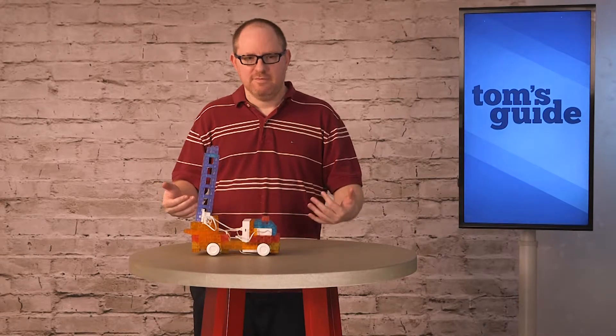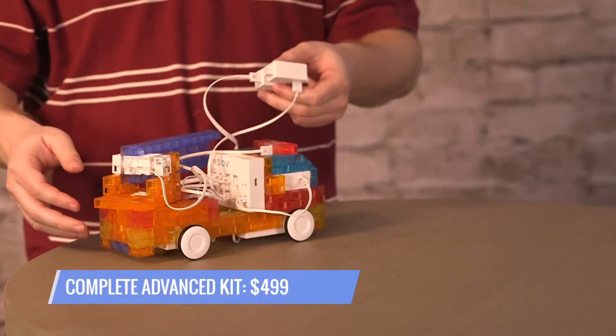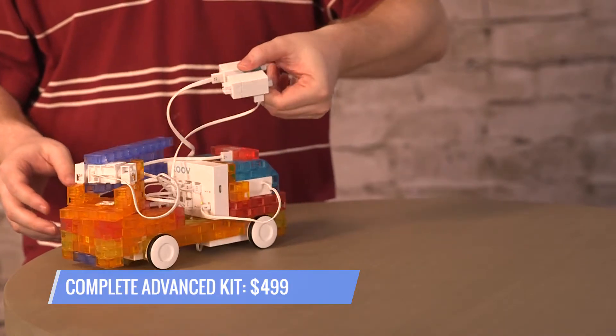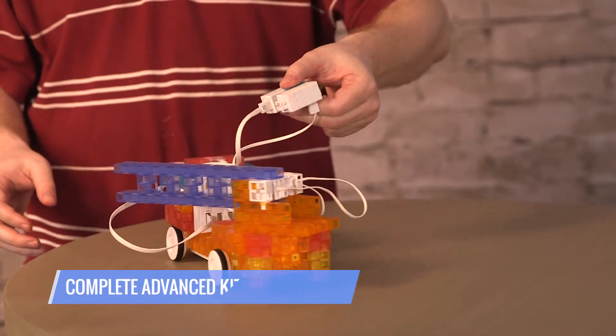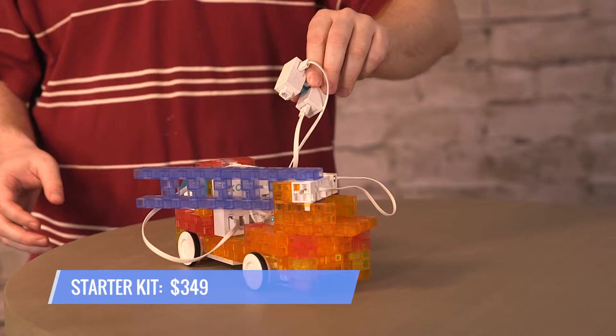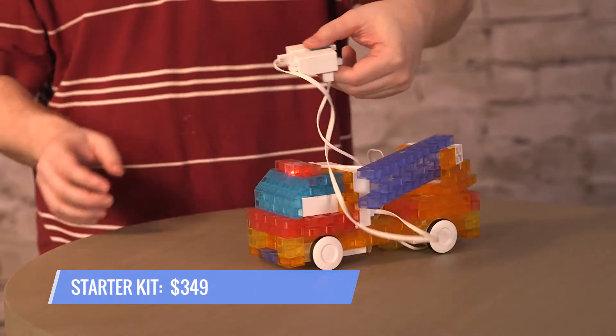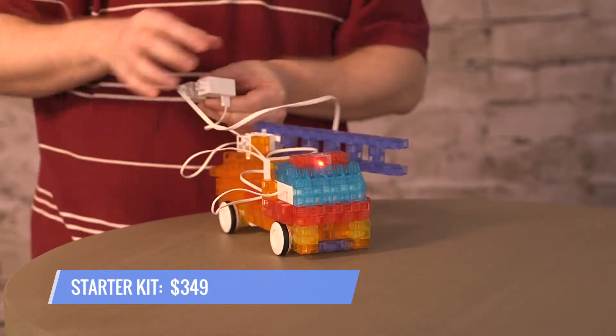It's really expensive. The advanced kit that has all the light sensors, motors, and blocks is $499. There is a starter kit that's $349 and has enough stuff for you to make 14 out of the 23 possible robots.